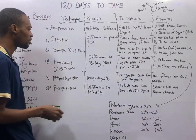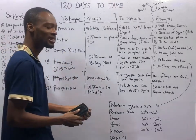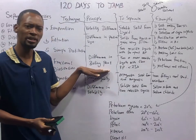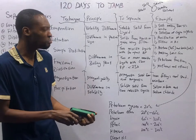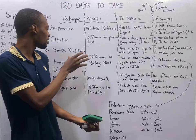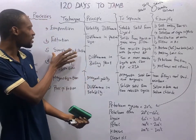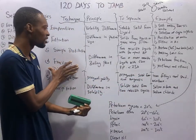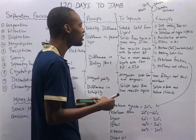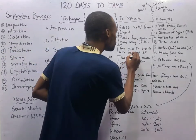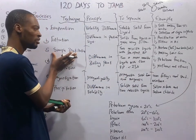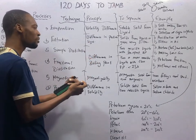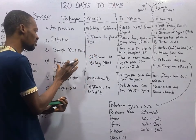Next is distillation. We have simple and fractional distillation, and they both operate on the principle of difference in boiling points. When you have a difference in boiling points between mixtures, you employ distillation. When you have two miscible liquids with far-apart boiling points, you employ simple distillation. When you have two or more liquids with very close boiling points, you use fractional distillation.